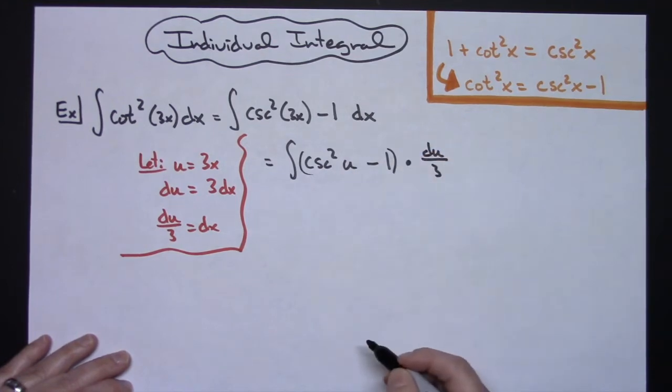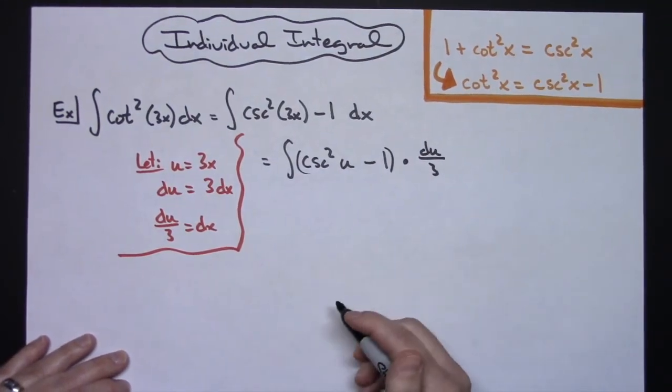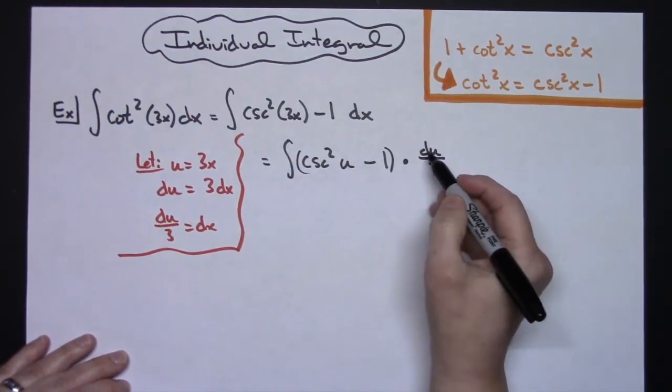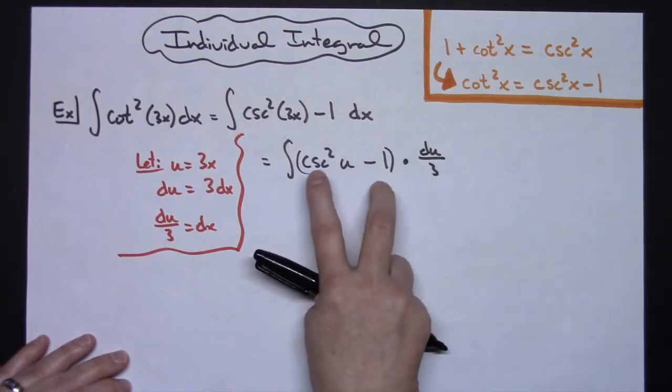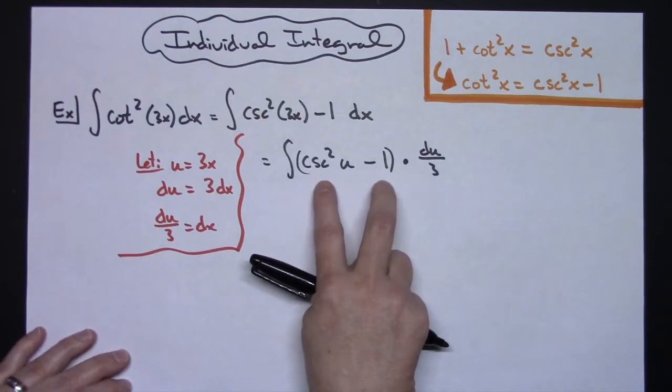Now keep in mind that is all one expression right there. On this next step what I'm going to do is I'm going to pull out this 1 3rd out in front and then I'm going to break this up into two separate integrals.